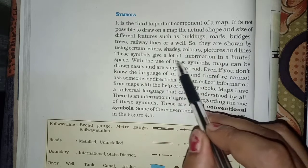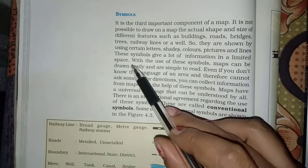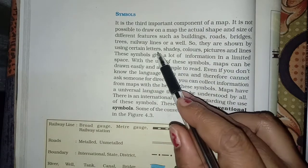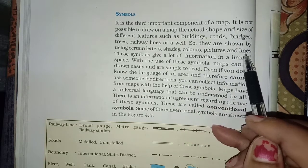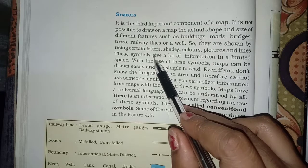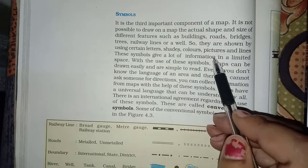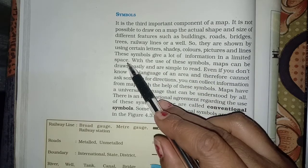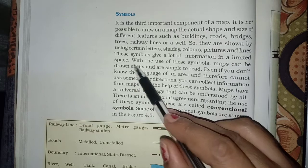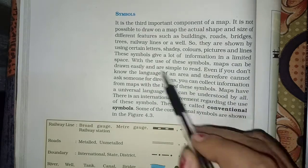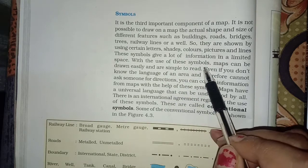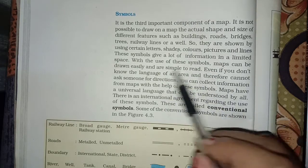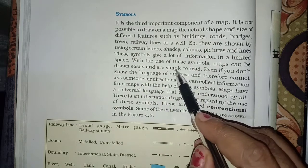These symbols give a lot of information in a limited space. With the use of these symbols, maps can be drawn easily and are simple to read. In symbols, we can easily draw these symbols and easily read them.